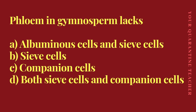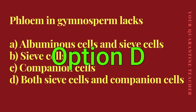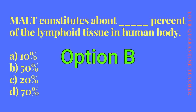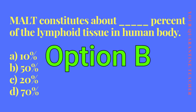Next question: phloem in gymnosperms lacks what? Option A: albuminous cells and sieve cells, Option B: sieve cells, Option C: companion cells, Option D: both sieve cells and companion cells. The answer is Option D — both sieve cells and companion cells. Then: MALT constitutes about what percentage of the lymphoid tissue in the human body? This is a direct NCERT question. The correct answer is Option D — 50%.